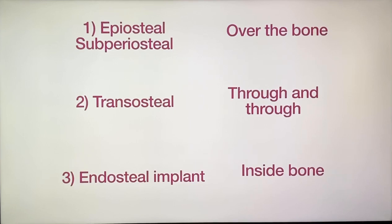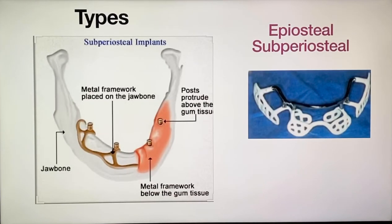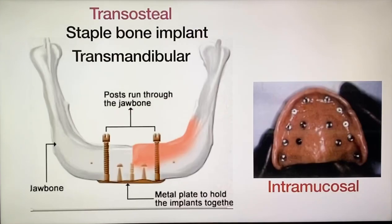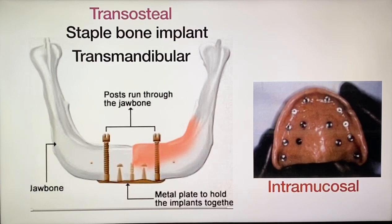You can remember it by the logic: over, through, and inside. Now we will first see the sub-periosteal implant. In the sub-periosteal implant, there is a framework over the jawbone and over that the periosteum is laid. This design is not used nowadays because of its invasive surgical procedures. The second is the transosteal implant, also called the staple bone implant or transmandibular implant. In this, the implant penetrates two cortical plates and extra-oral surgery is required for placement of the metal plate.